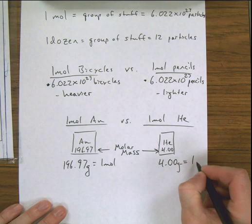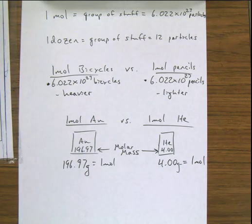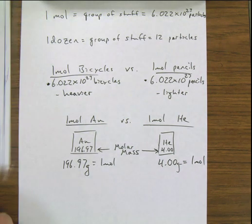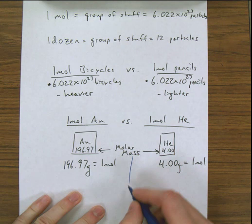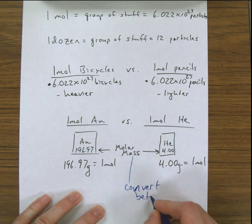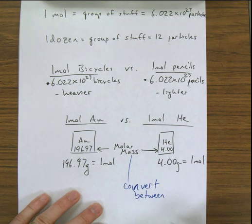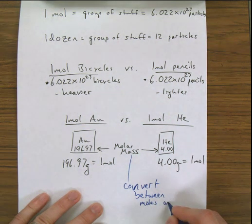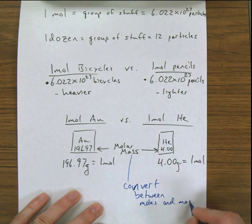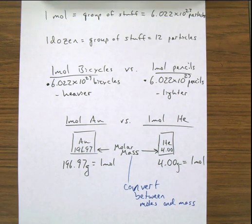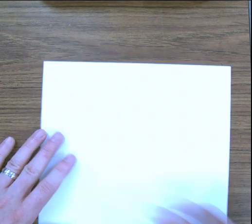We can use this information to convert between moles and grams. Molar mass — just a defining feature of it — allows you to convert between moles and mass, and of course back and forth. So what we're going to do is a bunch of problems using that concept, and we're going to take notes on using molar mass to do conversions.